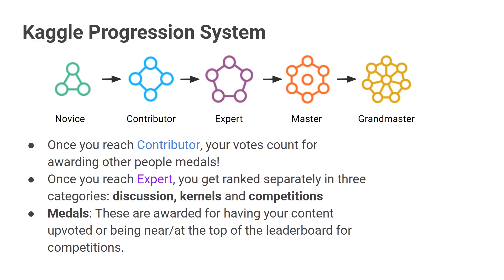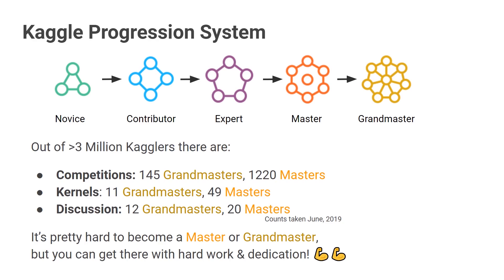Finally, the progression system. Kaggle has a five-tier progression system. Everybody starts as a novice — everyone on Kaggle was a novice once — and then there's a checklist of things you can do, and once you finish that, you are a contributor. Once you're a contributor, your vote starts to count for awarding people medals. Medals are important for moving from the expert, master, and grandmaster tiers. There are actually three different ways to become a grandmaster: through discussion posts, through kernels — your shared code that many people have upvoted — and through competitions, where you need to get a certain number of medals across a certain number of competitions. Medals are calculated based mainly on the number of non-novice votes, and there's some additional measures to avoid abuse.